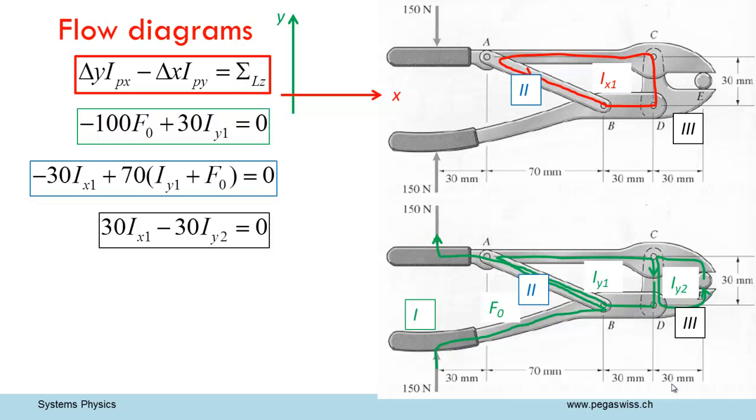Now, we can solve these three equations for the unknown quantities. The results are as follows. IY1 is 10 thirds of the applied force. IX1 is more than 10 times as strong as F0. And IY2 is equally strong as IX1. The calculation shows that through coupling, the momentum flow of 150 N applied at the handles results in an approximately 10 times stronger momentum flow at the bolt.